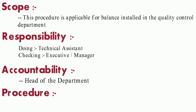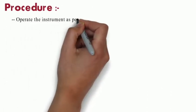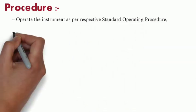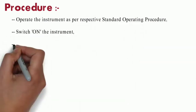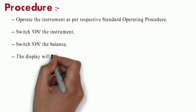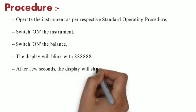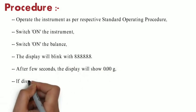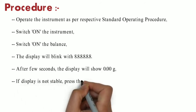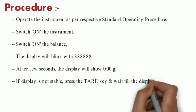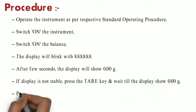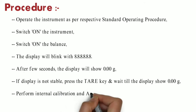In procedure, first we have to operate the instrument as per respective standard operating procedure. Switch on the balance. Display will ping with 8888. After a few seconds, the display will show 0.00 grams. If display is not stable, press the tare key and wait till the display shows 0.00 grams. Perform internal calibration in Annexure 2.